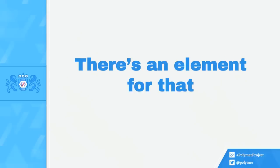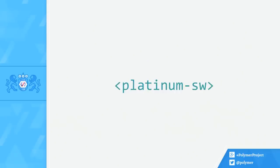What does this have to do with Polymer? Well, there's an element for that — specifically Platinum SW, or the set of Platinum SW elements. The SW here stands for Service Worker. It's a new feature implemented in Chrome, but it is coming to other platforms. Mozilla have their implementation pretty complete, it's in Nightly builds, and they're just waiting to make sure it's absolutely stable. Other browsers have shown great interest in implementing this.